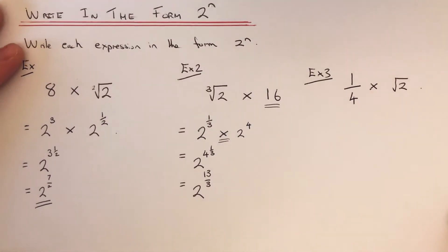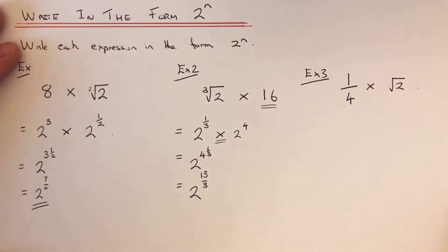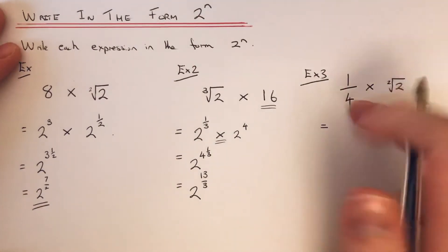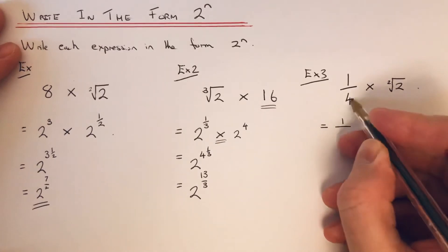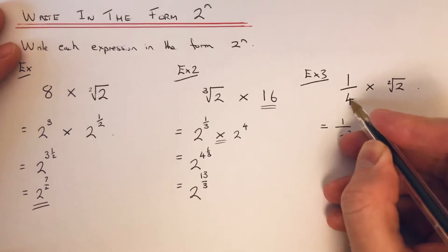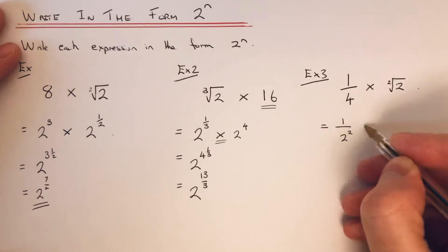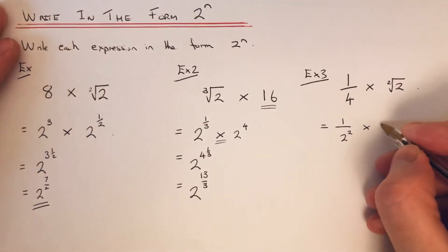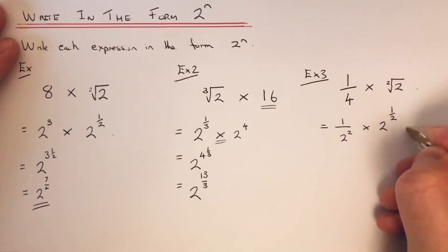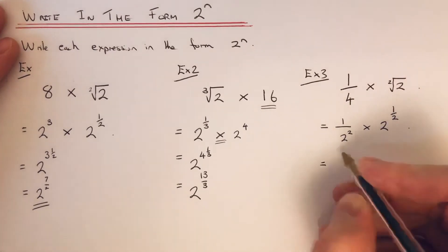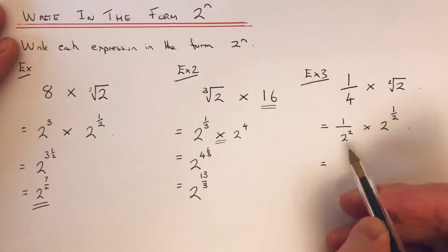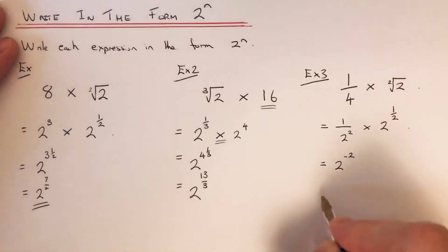So let's have a look at the third example. This time we've got 1 quarter times the square root of 2. We can change that 4 at the bottom to 2 squared, because 2 times 2 is 4. We know from the first example the square root of 2 is the same as 2 to the power of a half. We can bring the 2 squared to the top line by writing it as 2 to the power of minus 2. So that is your negative power rule.